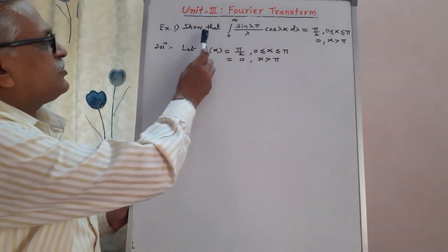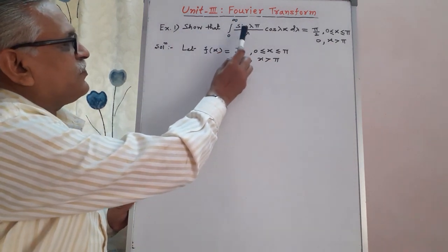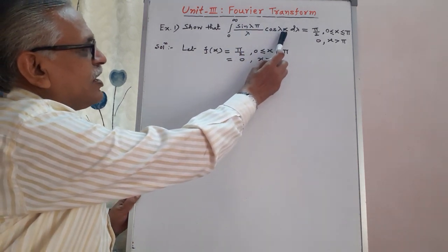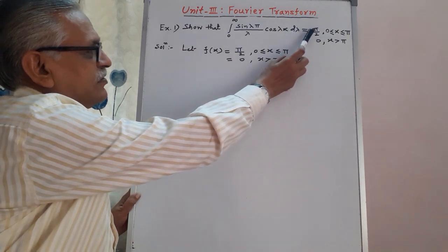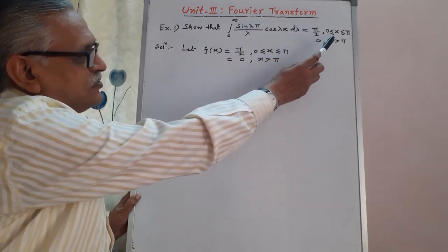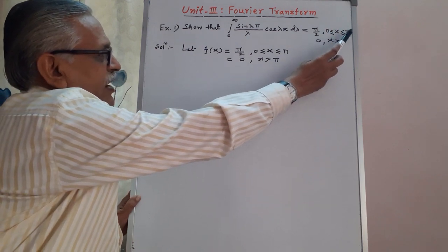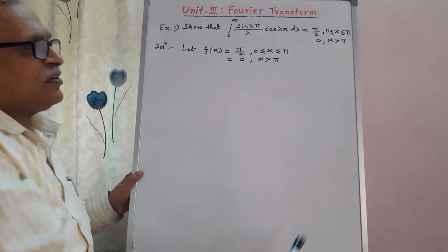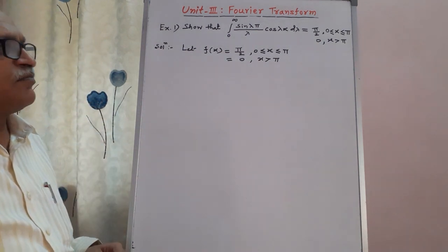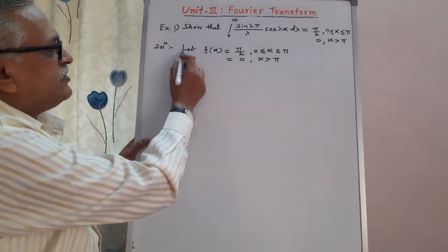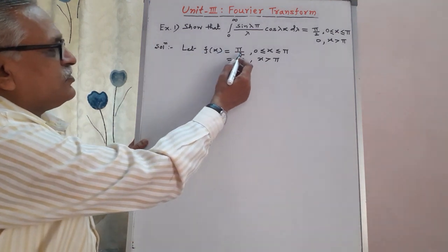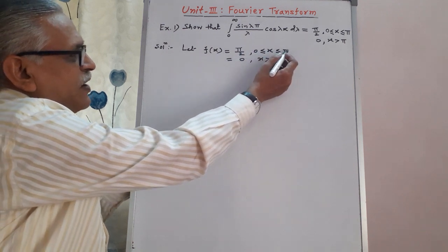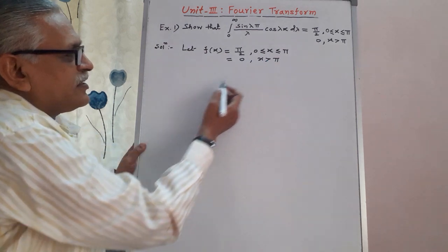Example number 1: show that the integration from 0 to infinity of sin(λπ) divided by λ, multiplied by cos(λx) dλ, equals two values — first, π/2 for x in the range 0 to π, and second, 0 for x greater than π.